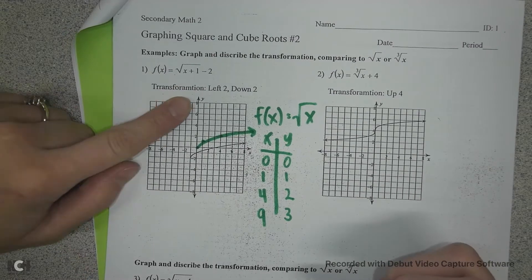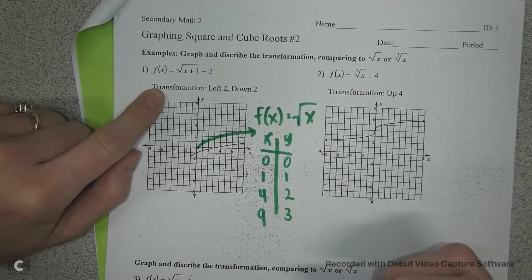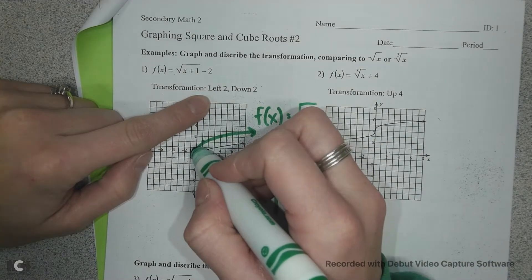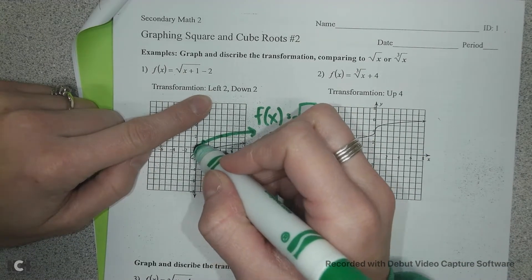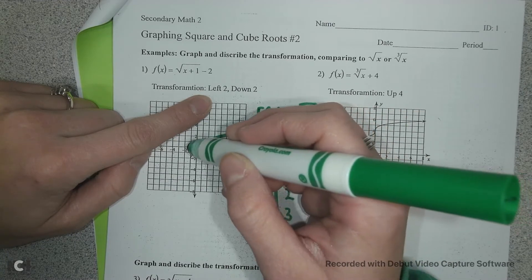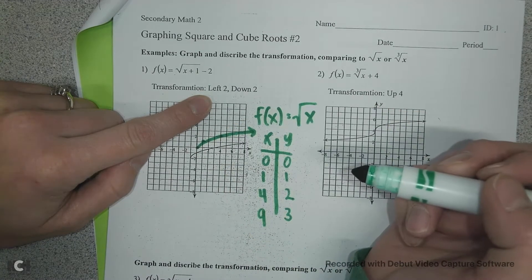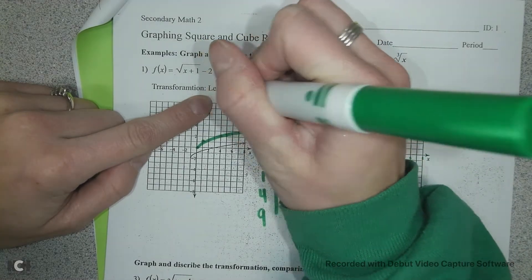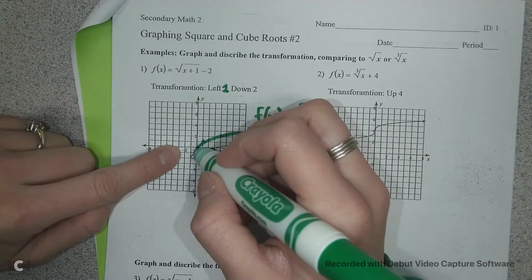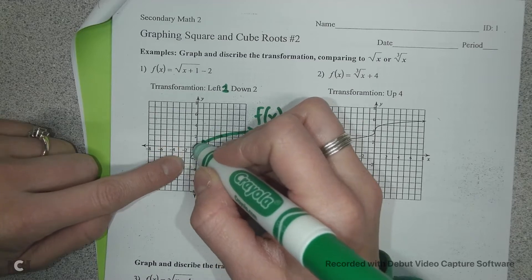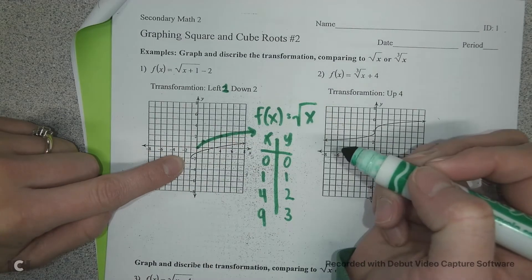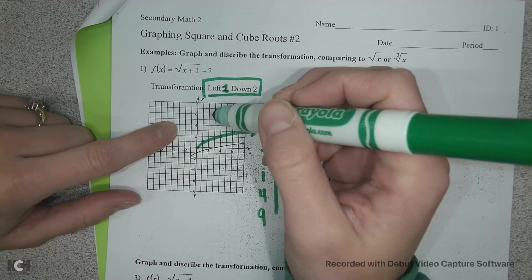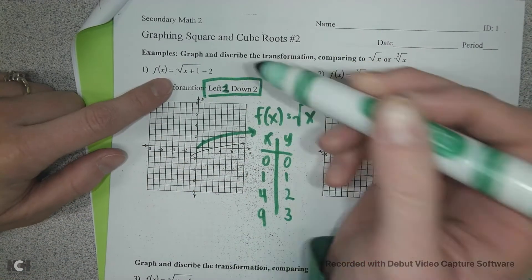So we are also describing the transformation. It went left 1 and then down 2 to go from the parent function to the new graph. So this is the transformation that goes from the parent function to the new graph.